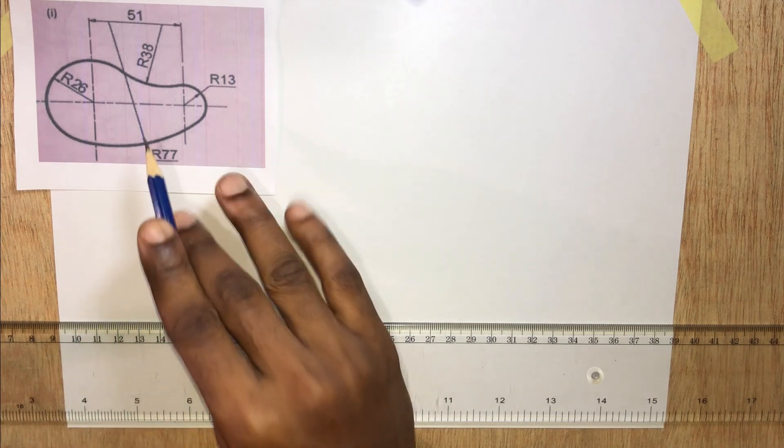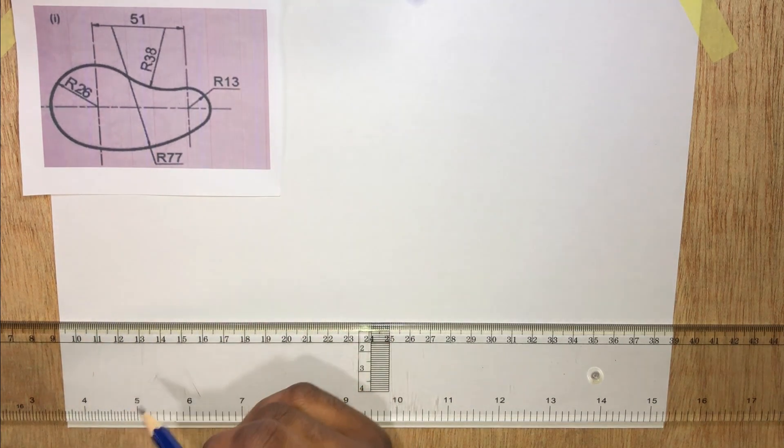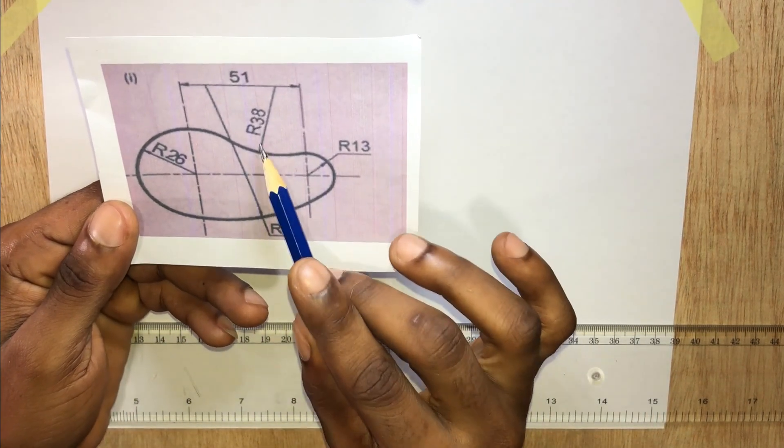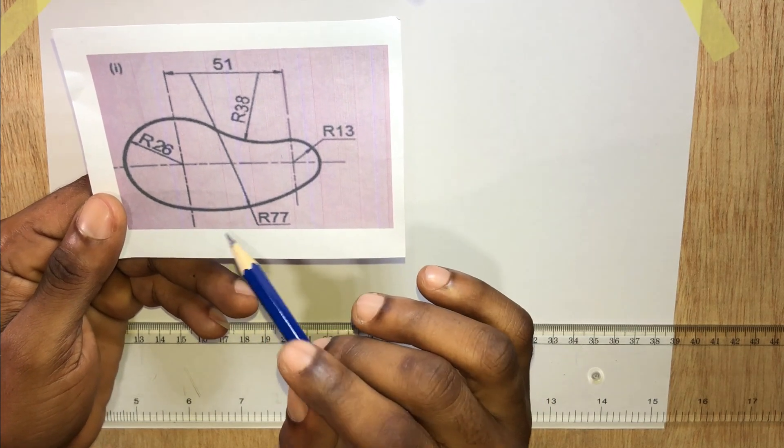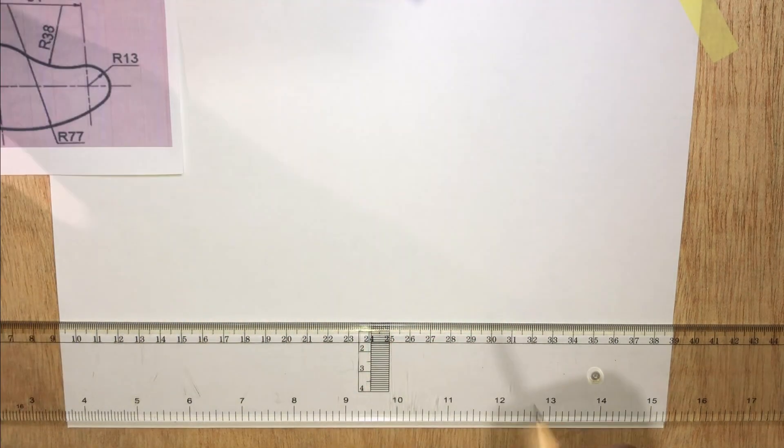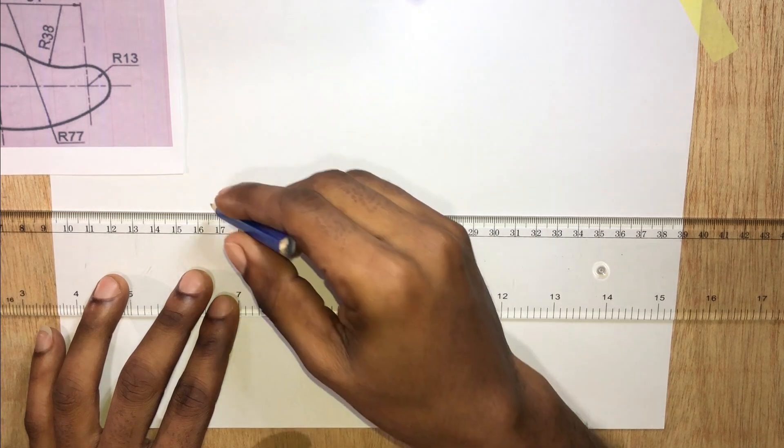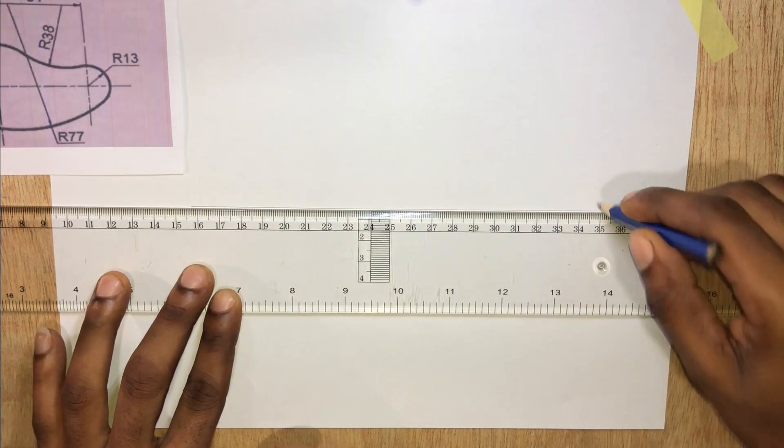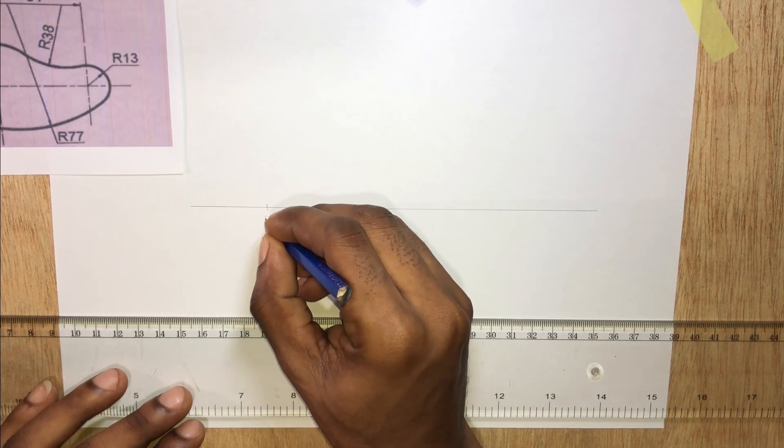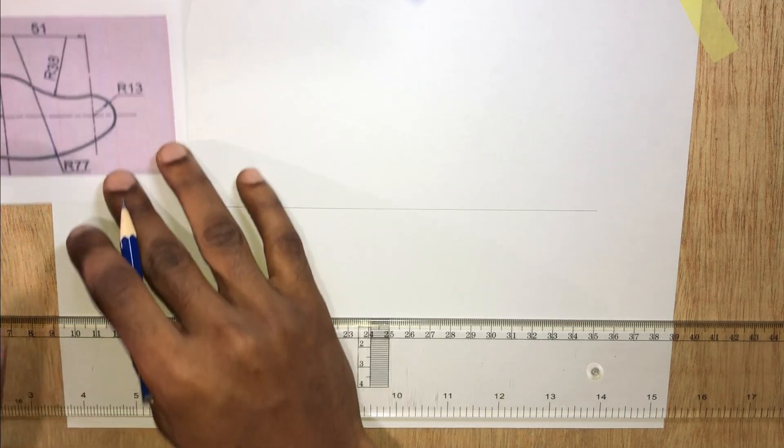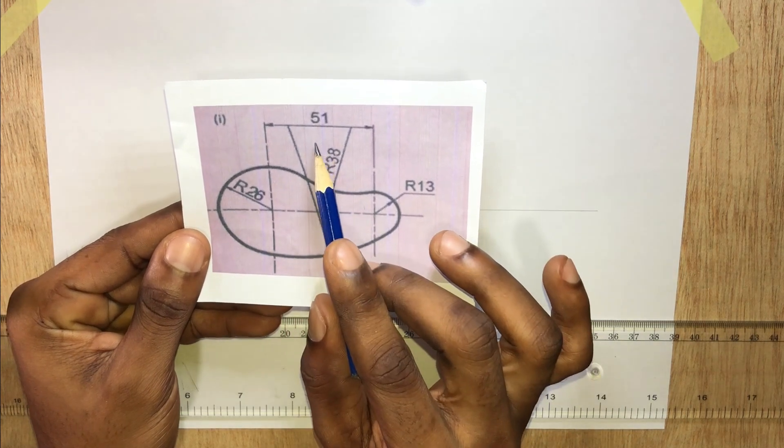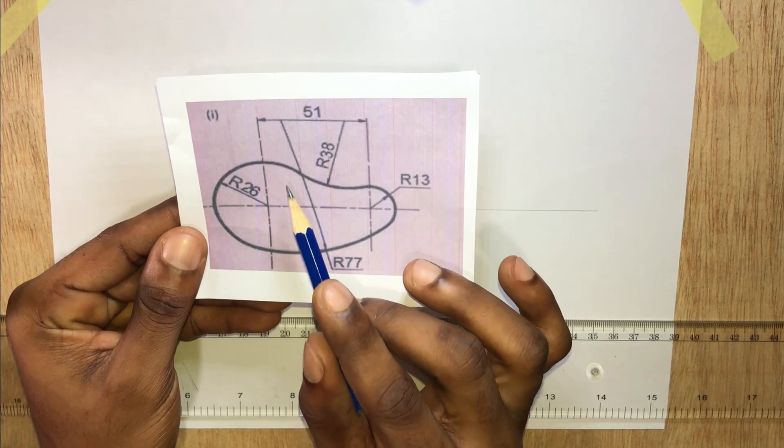We'll be looking at how to draw this figure. Now this figure has one, two, three, four circles. First let's start by drawing our horizontal baseline. The distance here is 51 millimeters which is the same as 5.1 centimeters.